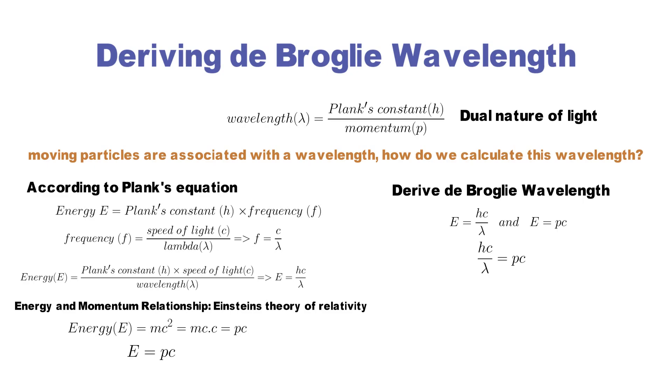Further solving, we arrive at de Broglie's wavelength equation, which relates the wavelength of a particle to its momentum. So we have wavelength equals Planck's constant divided by momentum.